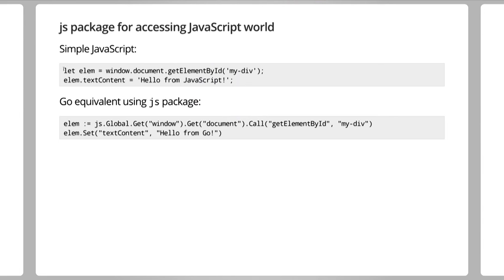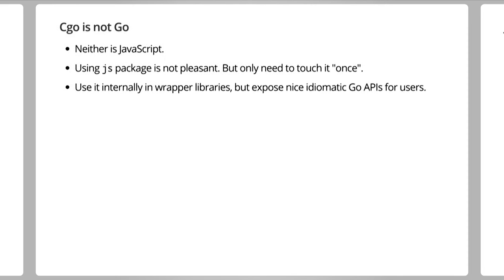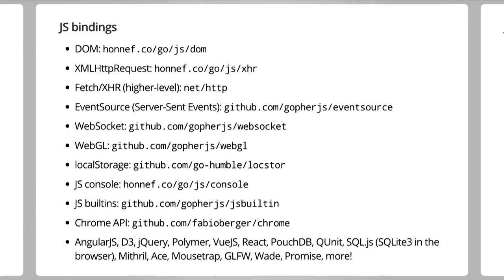Just to give you an idea, here's some simple JavaScript, and here's the equivalent behavior using the JS package in Go. Something to understand here: just like there's a saying that CGo is not really Go — well, neither is JavaScript. It is not a lot of fun to use the JS package directly. But the good news is you only have to do this once. You do this internally inside wrapper libraries, and then you can expose really nice idiomatic Go APIs for users. There's already a lot of them created — bindings for DOM, XHR, Fetch, EventSource, WebSocket, too many to name.